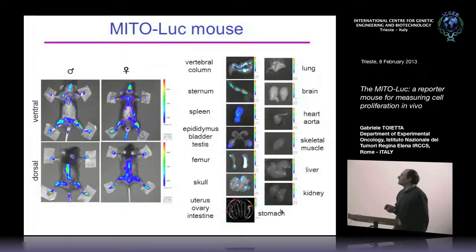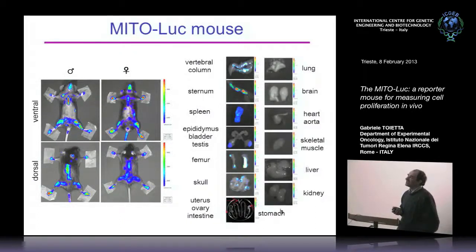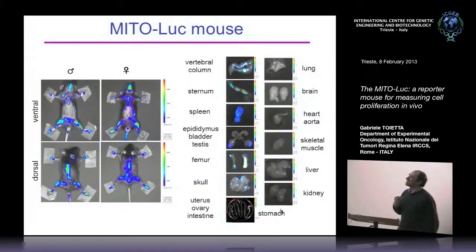On the other hand, there is no signal at all in quiescent organs where no active proliferation takes place, like muscle, liver, and brain. What you can also see is some very strong positive signals where the animal uses its paws to run across the cage — a very strong signal in the fingers of the animals and also in the teeth, because these are rodents with continuous tooth growth. It's fascinating because you can see what's going on in the live animal.